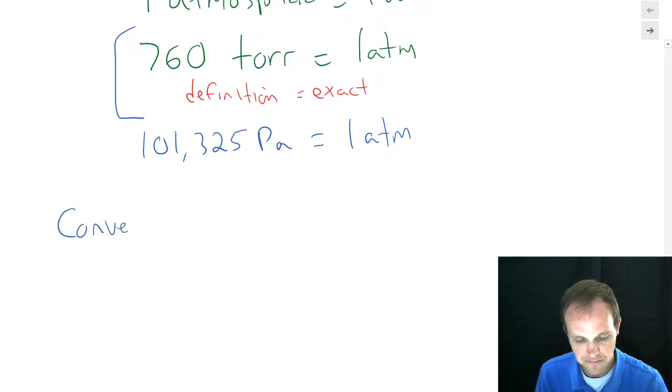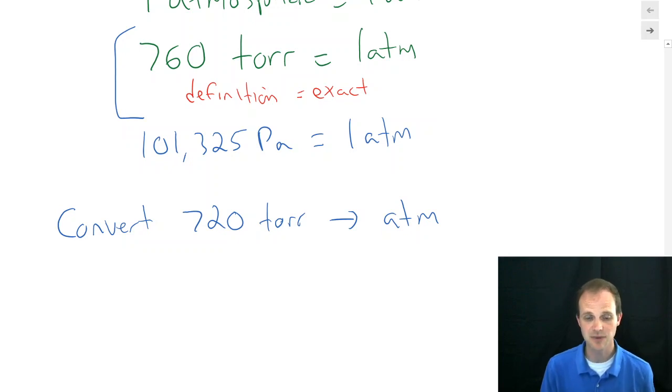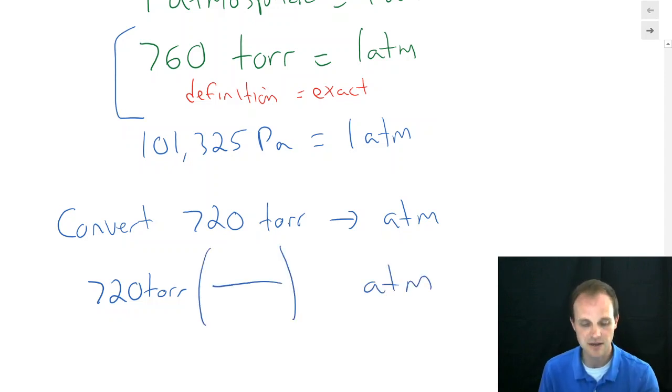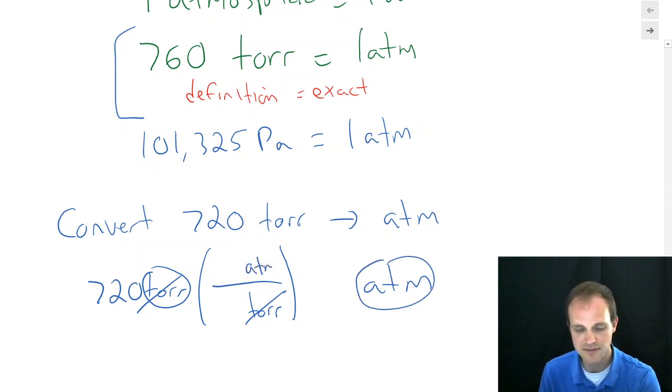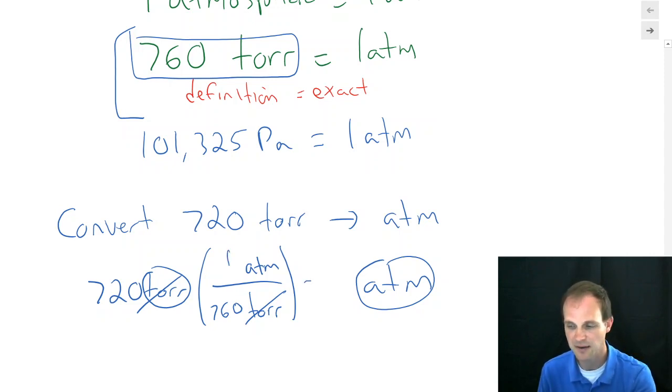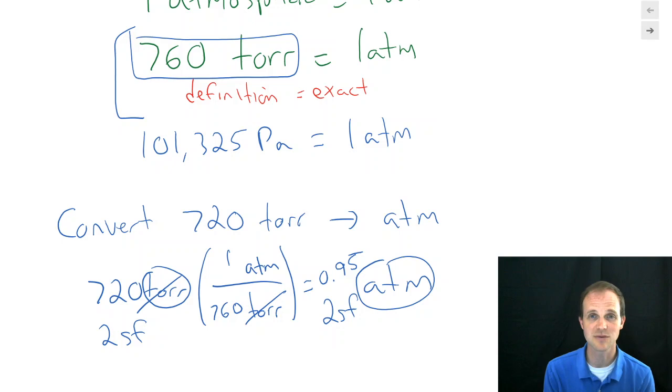So let's practice doing a conversion with Torr. And let's say we want to convert 720 Torr into atmospheres. And just like every other conversion in this class, what are we going to do? We're going to put our starting material over here. We're going to put our desired unit over here. What goes on the bottom? Well, Torr is on the top, which means Torr has to go on the bottom so they can cancel out. What goes on the top? We want ATM. So ATM has to go on the top. And what numbers do we put in? Don't memorize 760 goes on top, 760 goes on bottom. That'll get you in trouble. Memorize that numbers are attached to their unit. 760 is attached to Torr. So wherever Torr is, 760 is. And we got one atmosphere. And if you do that math, you get 0.95 atmospheres. I had two significant figures in my starting number. I have two significant figures in my ending number because my conversion factor was exact.